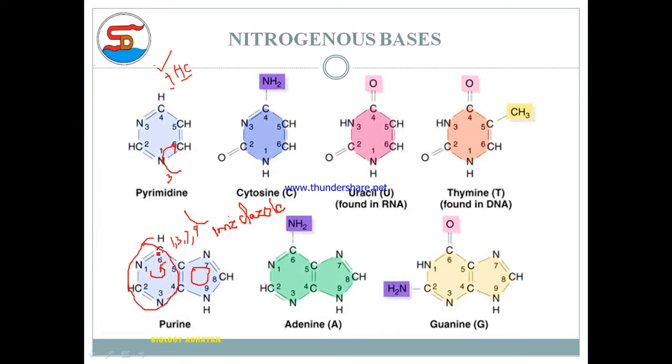In purines, positions 1, 3, 7, and 9 are nitrogen, while positions 2, 4, 5, 6, and 8 are carbon.